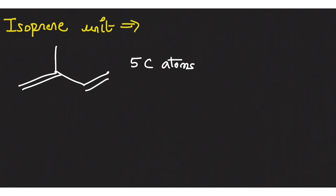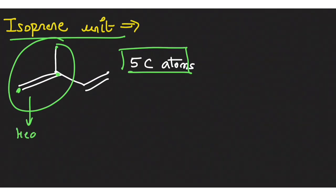So just have a quick recap of isoprene unit. This is the isoprene unit and it has five carbon atoms, the substituted part is known as the head, whereas the non-substituted part is known as the tail. This we had also covered in the last class.